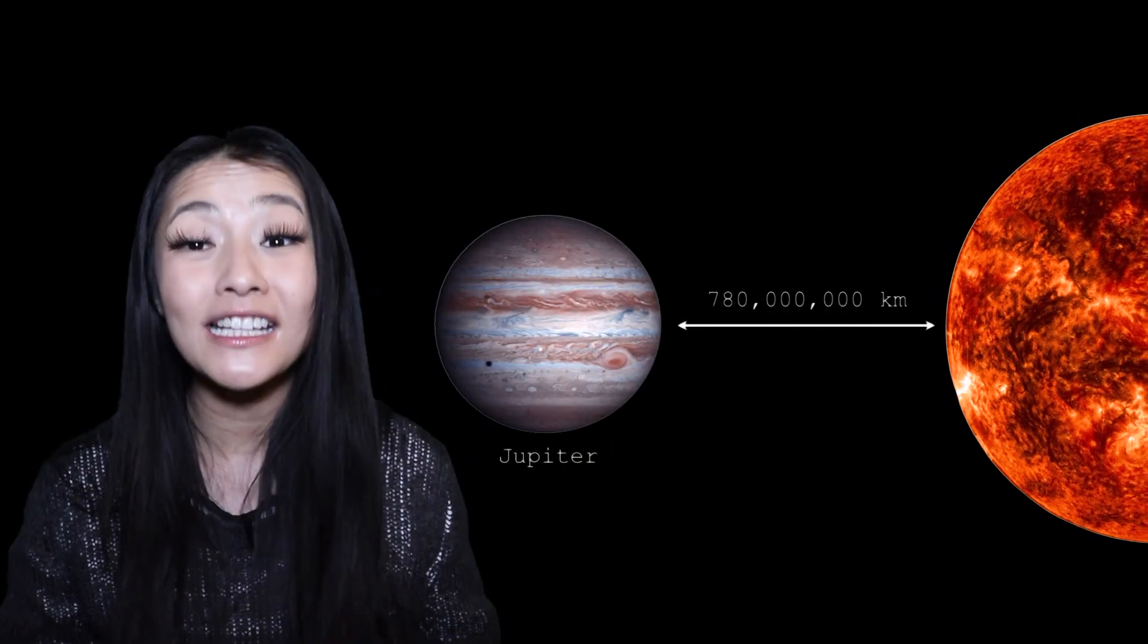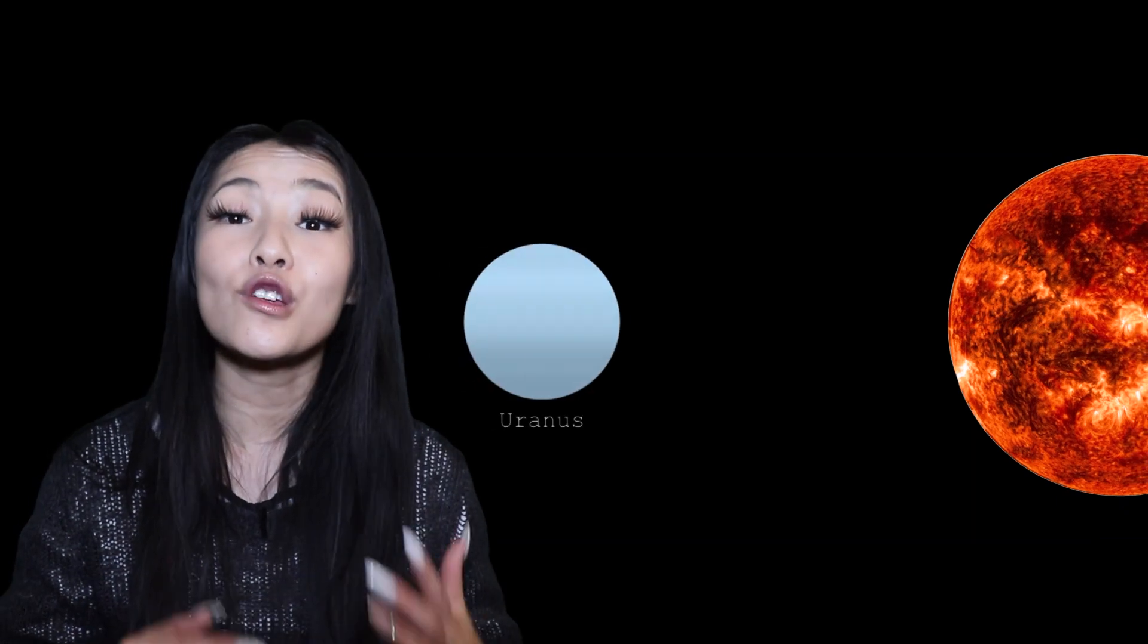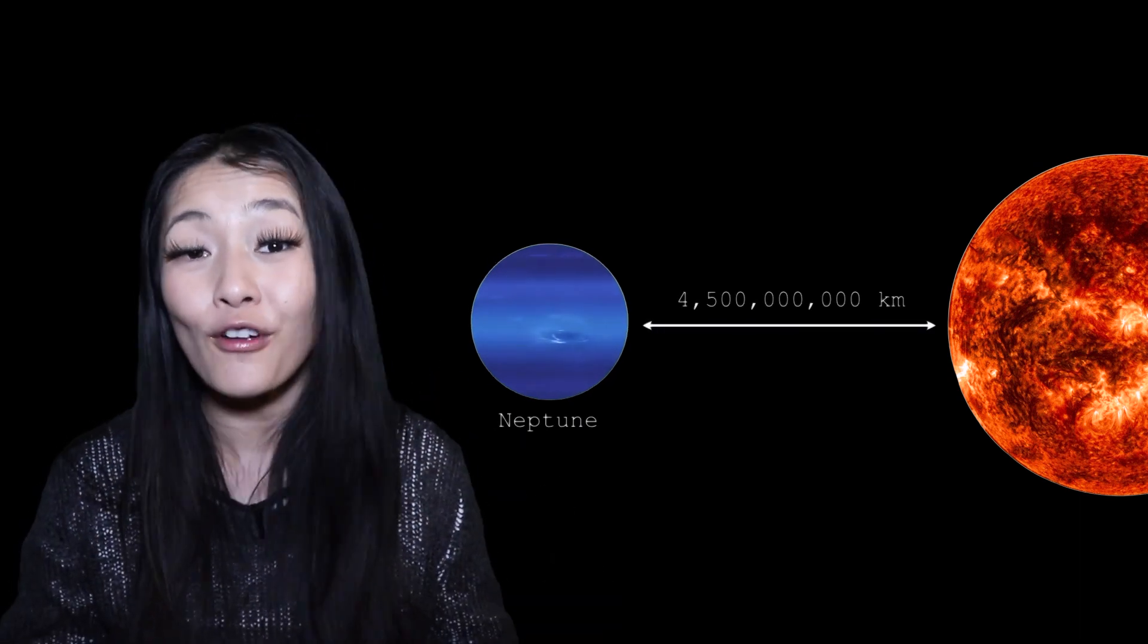But then Jupiter is a whopping 780 million kilometers. Saturn is 1,430 million kilometers out and Uranus is 2,870 million kilometers out and Neptune is 4.5 billion kilometers from the Sun.